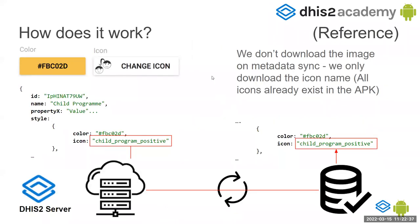How does it work in the Android Capture app? When you download the metadata, you are just downloading the icon name — you are not downloading the image. So don't worry that putting a lot of icons will make the metadata package heavier when downloading, because all the icons are already in the Android app. The only thing you will download is the name when you're syncing. The same applies to color — it's just in the JSON that you're downloading when you're configuring your data.